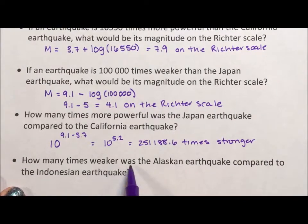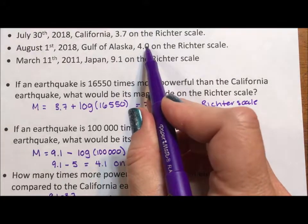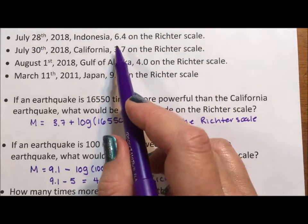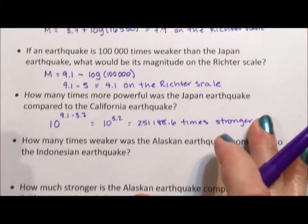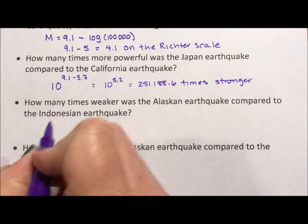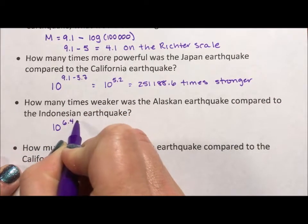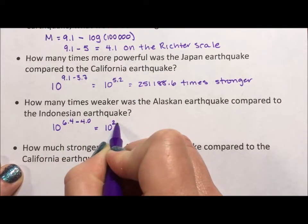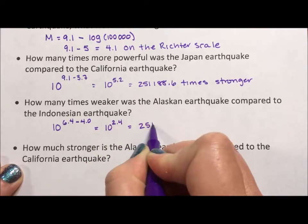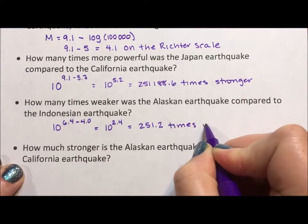Next, how many times weaker was the Alaskan earthquake compared to the Indonesian? The Alaskan was a 4.0 and the Indonesian is a 6.4, so we're comparing 6.4 and 4.0. We have 10 to the 6.4 — that's the Indonesian — minus 4.0 — that's the Alaskan — which gives us 10 to the 2.4, which is 251.2 times weaker.